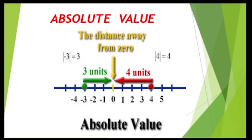Now, the absolute value — this is our main concept here. It is the distance away from 0. If I represent it on a number line, 0 is in the middle. To the left, 3 units are mentioned — left side means negative value. If I take the absolute value of minus 3, written in mod, it becomes positive 3. On the right side, 4 units: the absolute value of positive 4 remains positive 4.